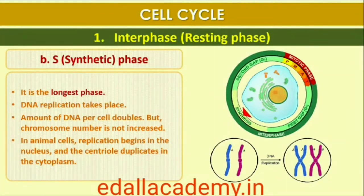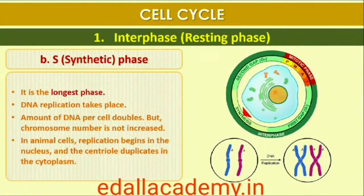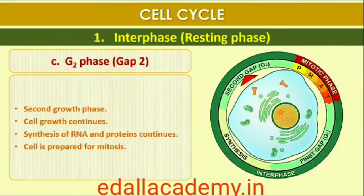In animal cells, during the S-Phase, DNA replication begins in the nucleus and the centriole duplicates in the cytoplasm. During the G2-Phase, proteins are synthesized in preparation for mitosis while cell growth continues.